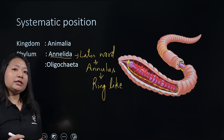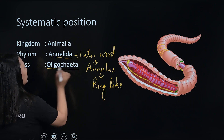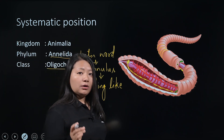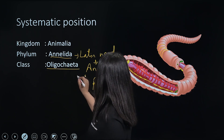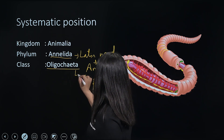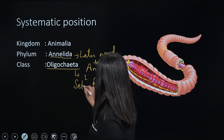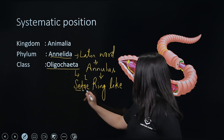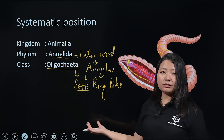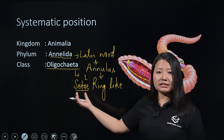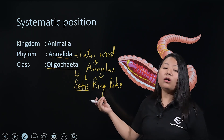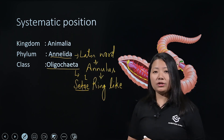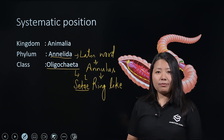Next, the Earthworm belongs to the Class Oligochaeta. In this class, the locomotory organ present is the setae. Because setae are present as the locomotory organ, these organisms are called Oligochaeta. The Earthworm's locomotory organ is the setae, so it is placed in Class Oligochaeta. We will go into more detail about this later.